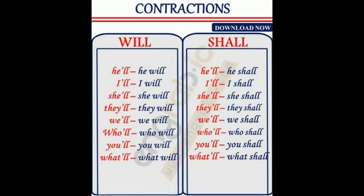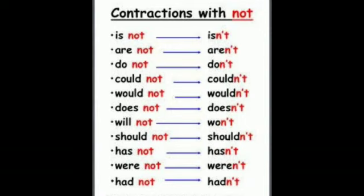Contractions with 'will' and 'shall': 'he will' becomes 'he'll', 'he shall' becomes 'he'll'. 'I will' becomes 'I'll', 'I shall' becomes 'I'll'. 'She will' becomes 'she'll', 'she shall' becomes 'she'll'. 'They will' becomes 'they'll', 'they shall' becomes 'they'll'. When using contractions with 'will' and 'shall', use the first word, then apostrophe and double-l.